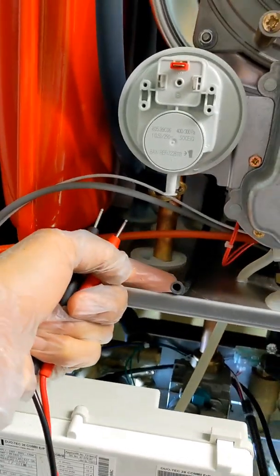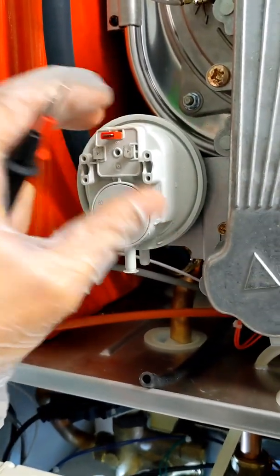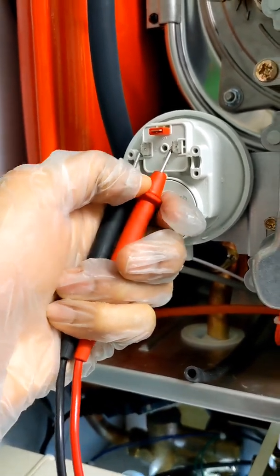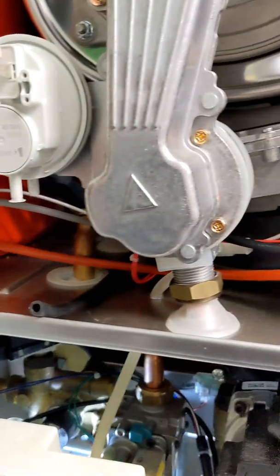So what was happening is condensate was backing up through there, going into the air pressure switch. At rest, this should have continuity across it, which we didn't have because the water backing up in here was breaking that switch. Now, if I put it all back together...